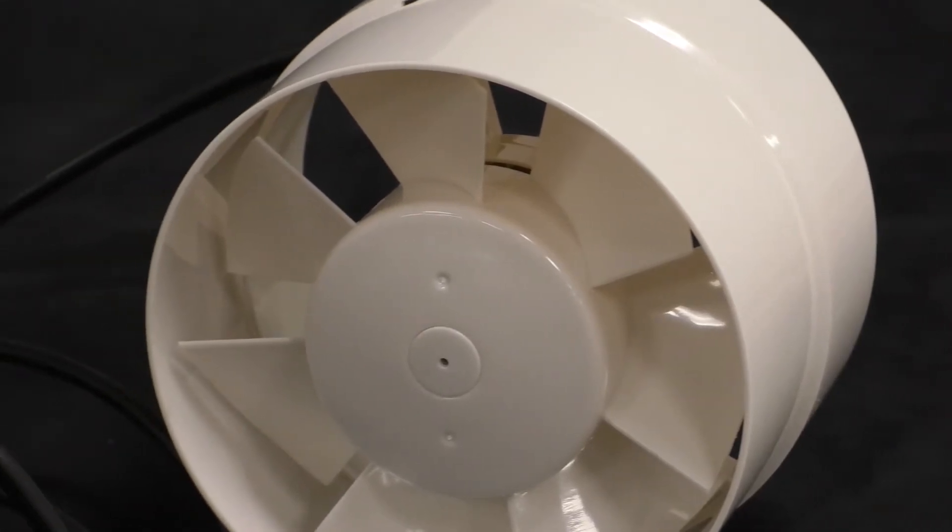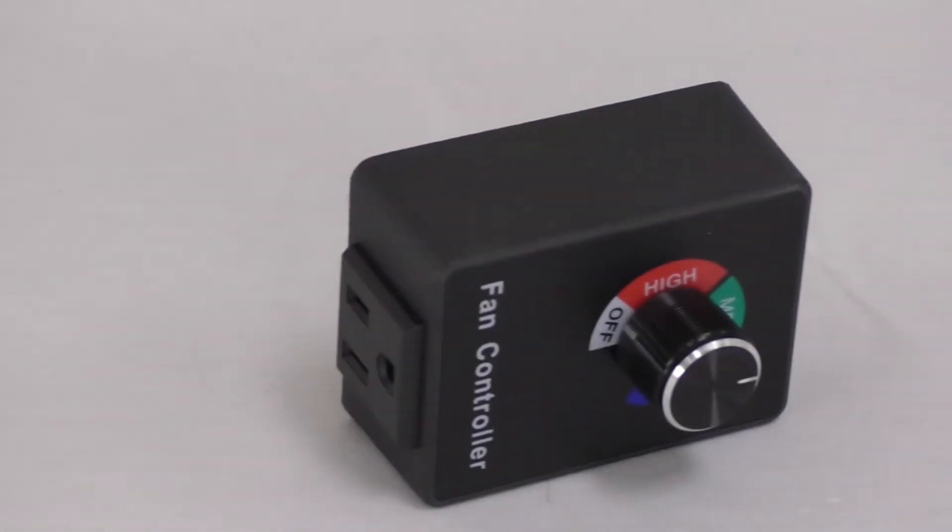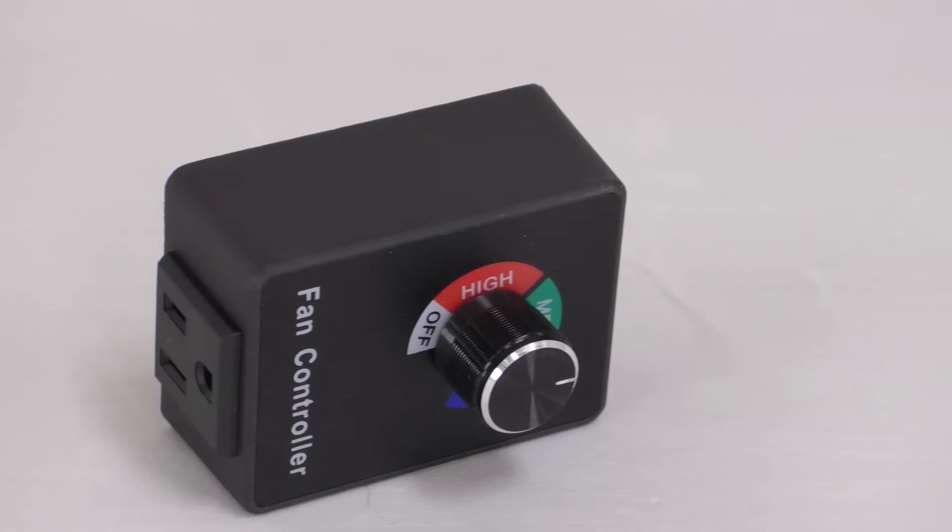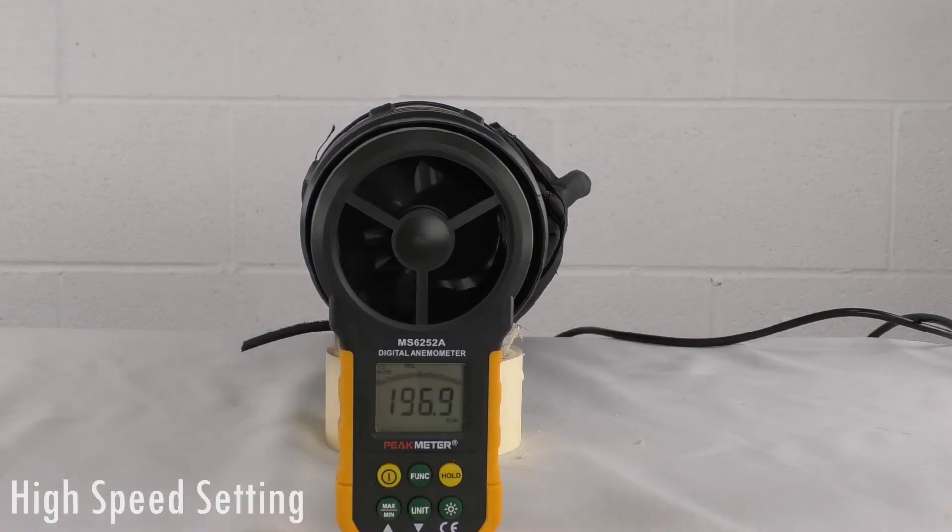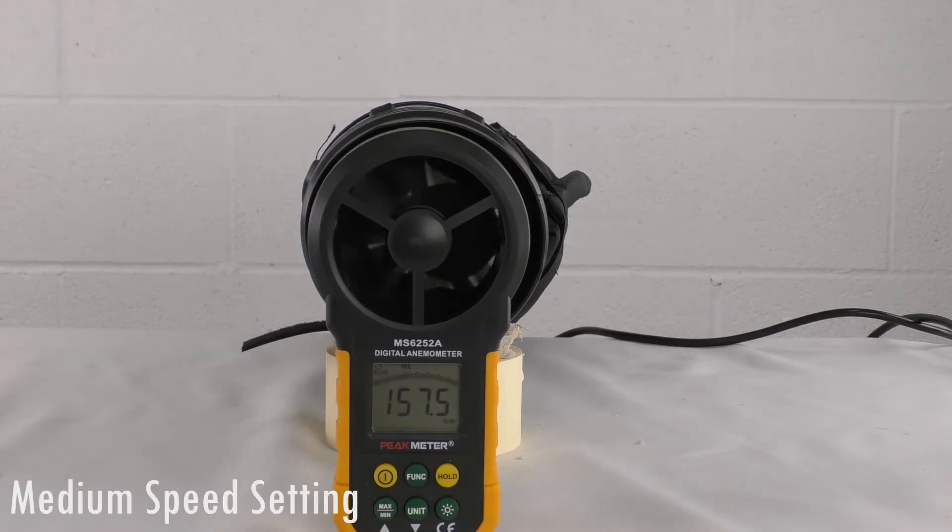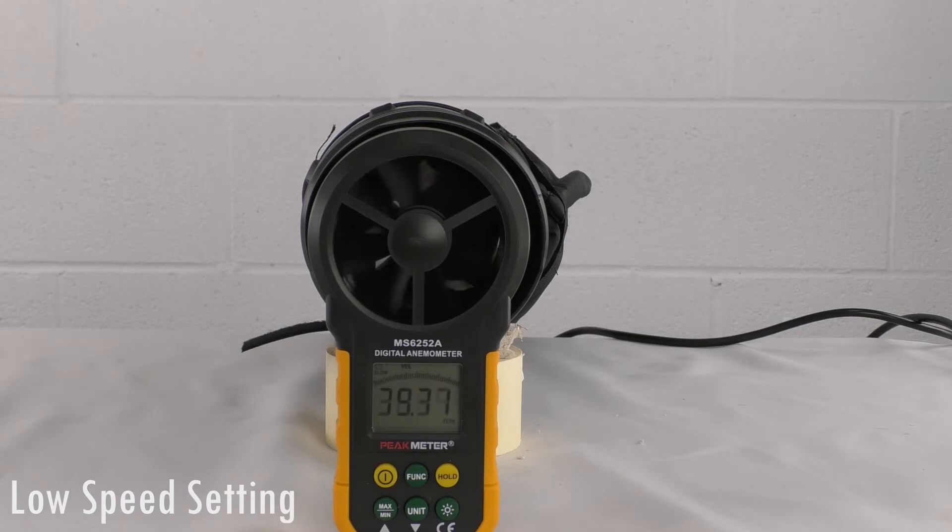Introducing our quiet ventilation fan for your vocal booth and the fan speed controller. This is the quietest fan on the market and it blows 253.9 cubic feet per minute on the high-speed setting and 39.37 cubic feet per minute on the low setting.